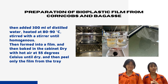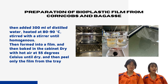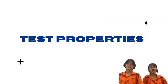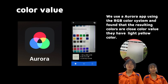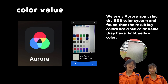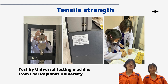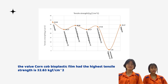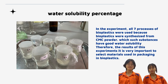From the results, the color values show that the bioplastic films have a light yellow color. For the tensile strength test by universal testing machine from Lakshapath University, the corn cobs bioplastic had the highest tensile strength at 32.63 kilogram-force per square centimeter.